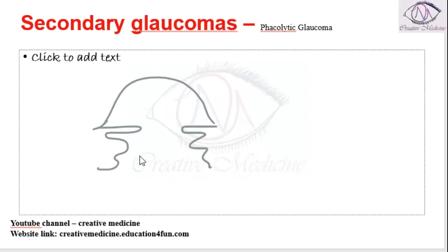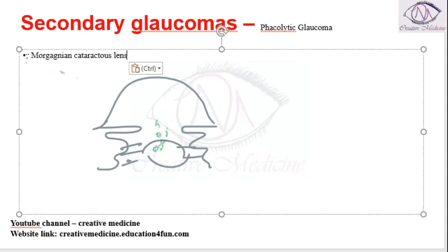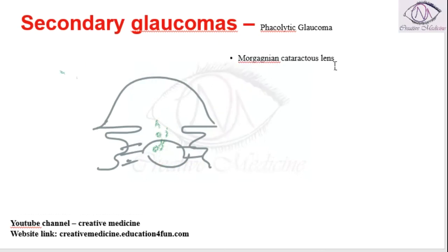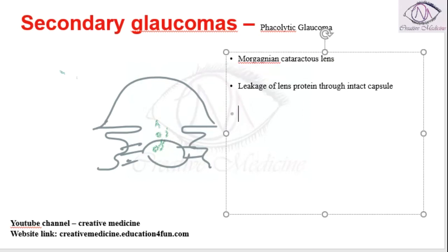In phacolytic glaucoma — here we have the cornea, the iris, the ciliary zonules, and the lens. From the lens, protein particles will start leaking. There is a morgagnian cataract lens, and because of this, leakage of proteins occurs from the lens into the aqueous humor through the intact capsule.